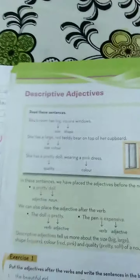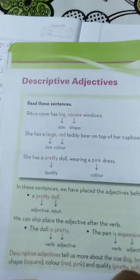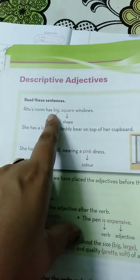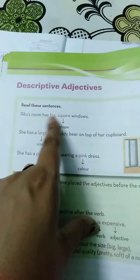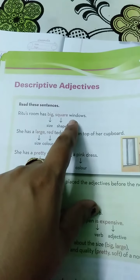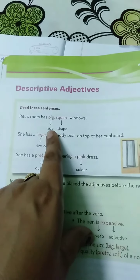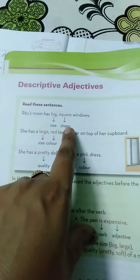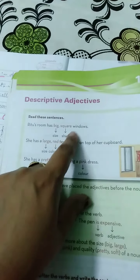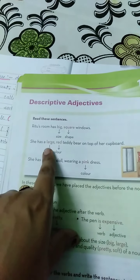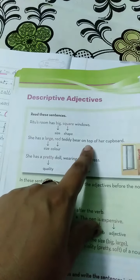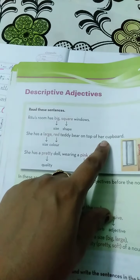Let's start with the exercise — it is chapter number 10, descriptive adjective. Example: 'Ritu's room has big square window.' Dekho, Ritu ke room mein window hai, but window ki qualities kya batai gayi hain? It is big and square — yahan uska size bata diya gaya hai aur square uski shape bata di gayi hai. It is descriptive adjective.